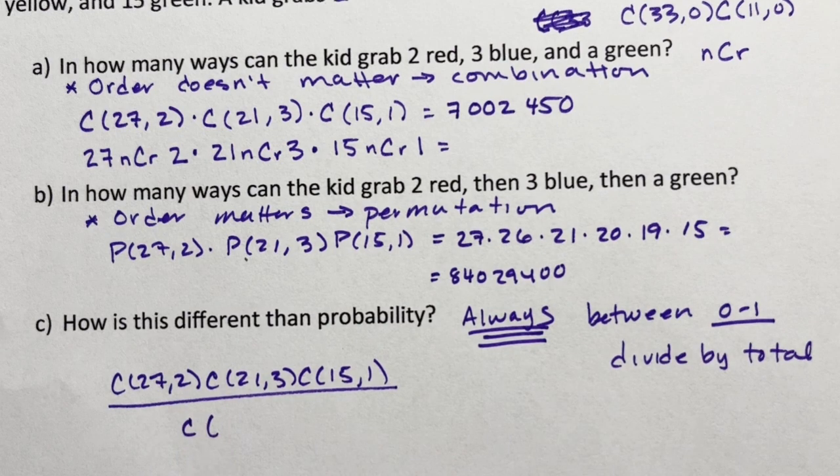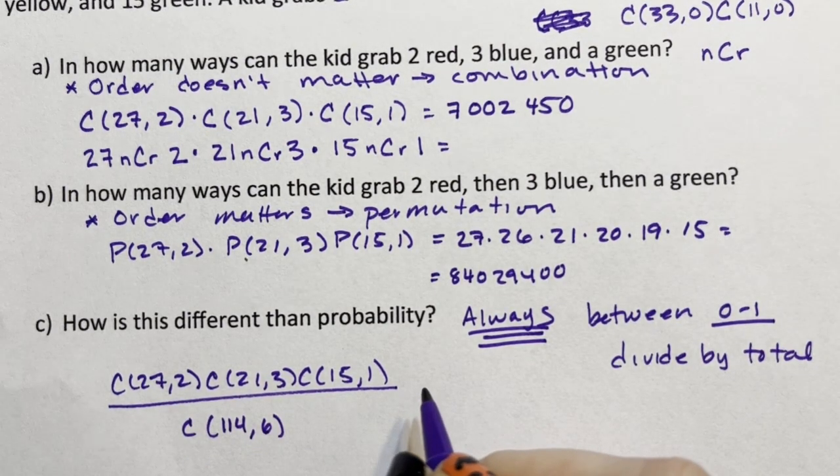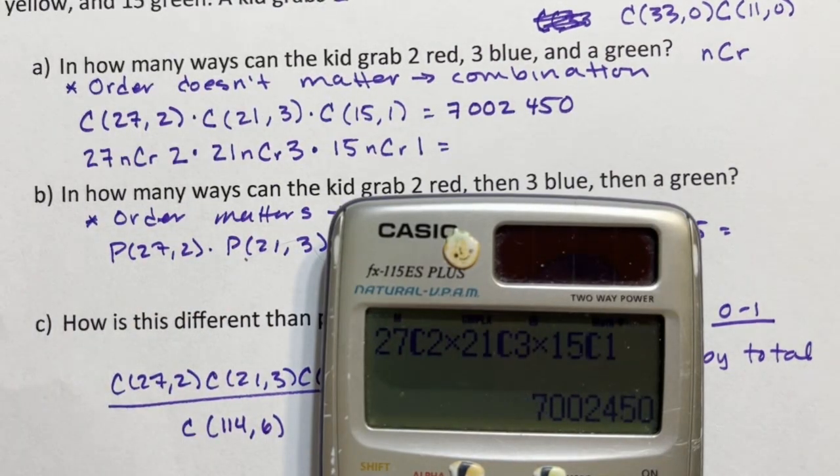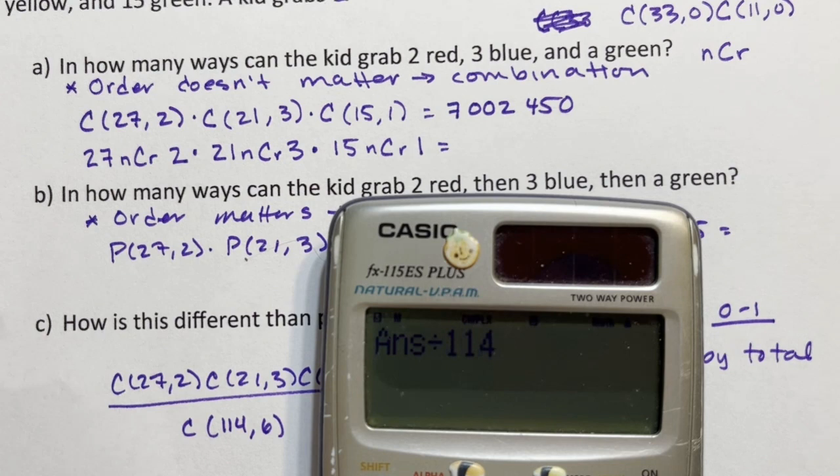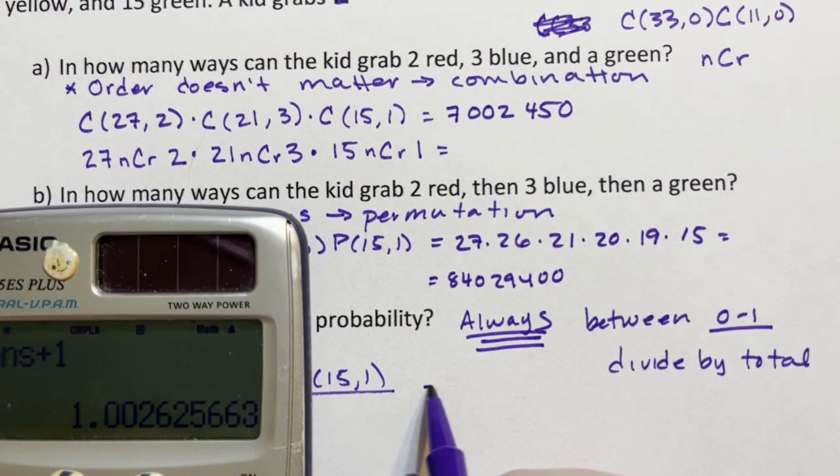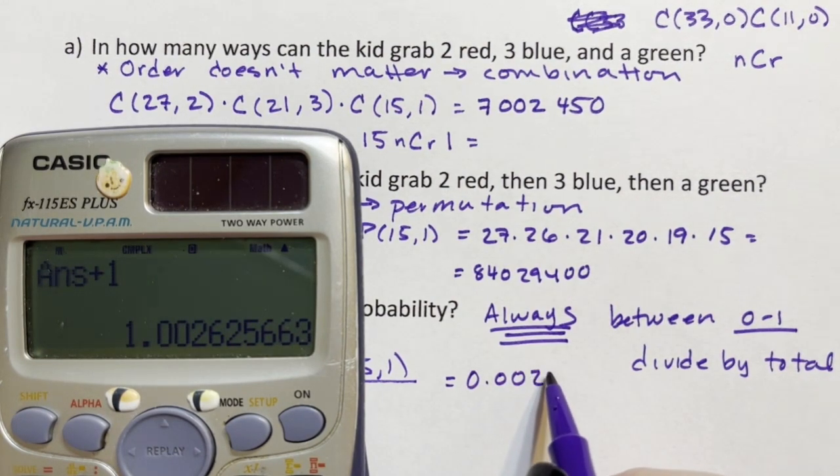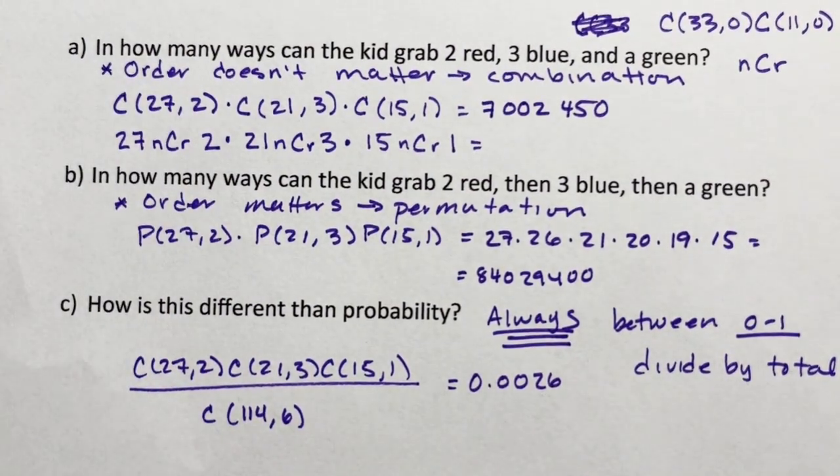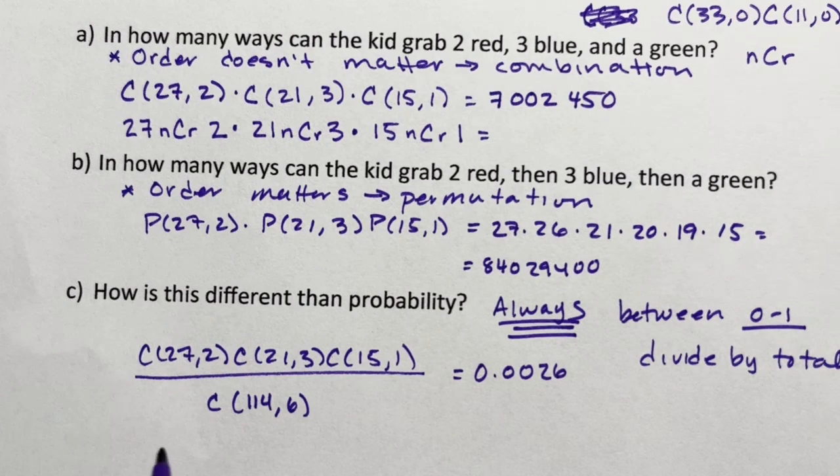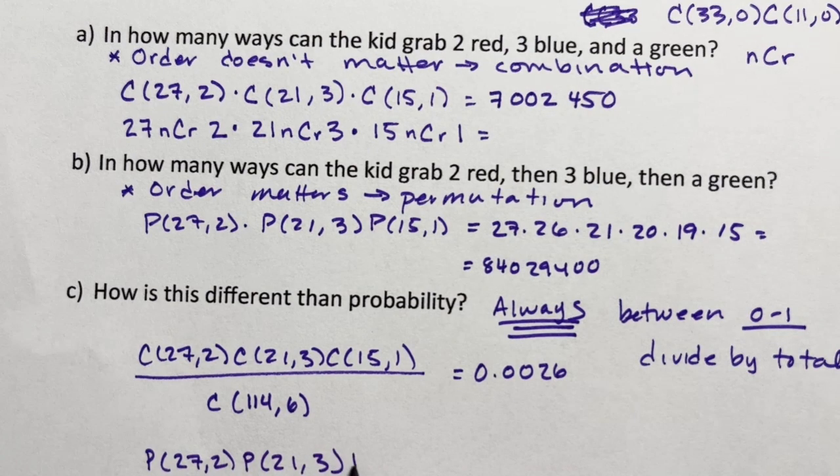For instance, C(27,2) times C(21,3) times C(15,1) divided by total. The total, if I add 27, 21, 33, 11, and 15, is the combination of 114 candies taken six at a time. So if I came back up to this answer and just say divide 114 combination six, I get this really small number. You can look at that and translate it. The answer is 0.000026.